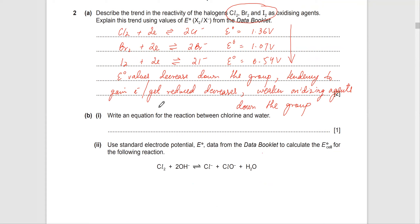The next question asks: write an equation for the reaction between chlorine and water. Chlorine reacting with water — this is from Group 17, you must know this reaction. Cl2 + H2O. This is chlorination of water; this is what happens in a swimming pool. It produces HCl and it produces HOCl. So two acids are produced when you add chlorine to water.